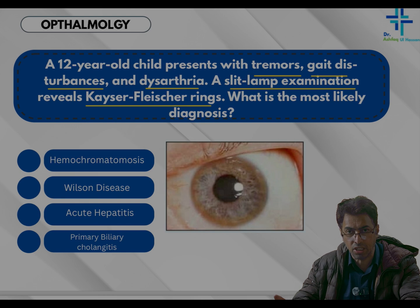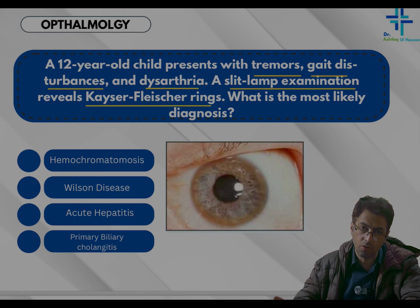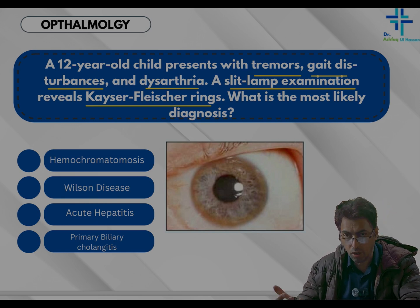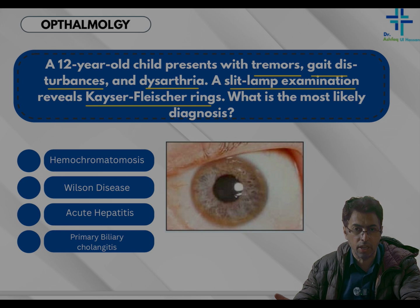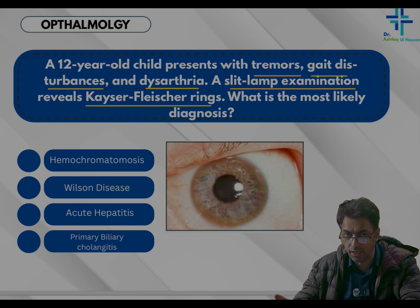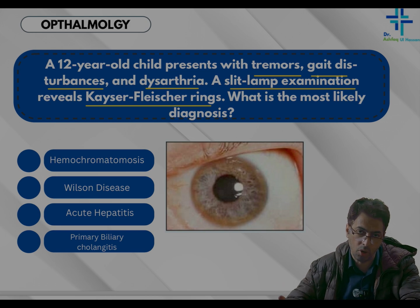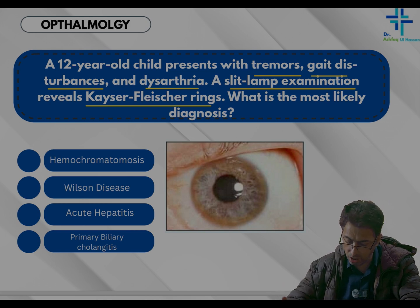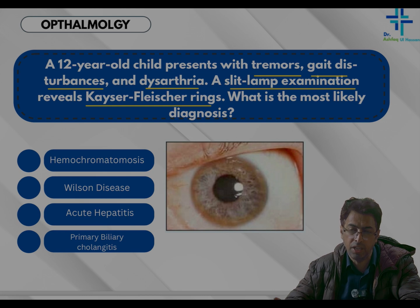The figure in the question itself confirms there are Kayser-Fleischer rings. Scanning through the options: hemochromatosis is an iron overload condition, and there are no corneal features in the form of ophthalmological defects in hemochromatosis. Acute hepatitis does not cause clinical symptoms like tremors, gait disturbances, and dysarthria.